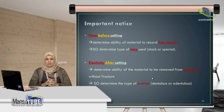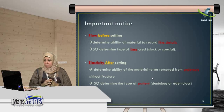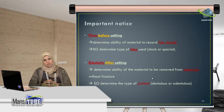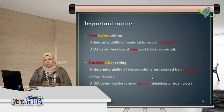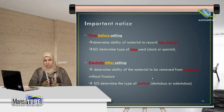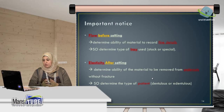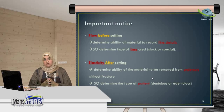Elasticity is measured after setting, not before. Elasticity after setting determines the ability of the material to be removed from undercuts, and this determines the type of patient. If the patient is edentulous without any undercut, a rigid impression material can be used. But if the patient has any undercuts, an elastic impression material must be used.